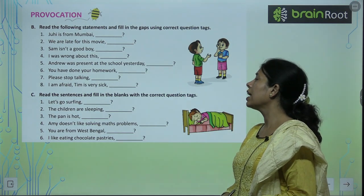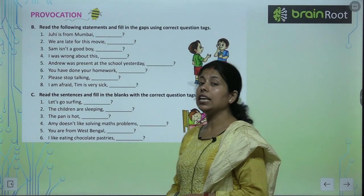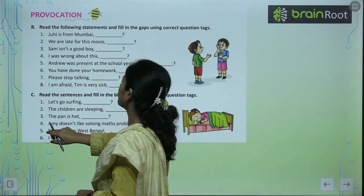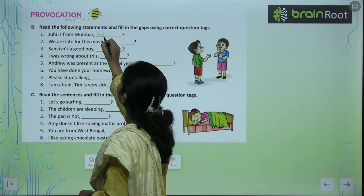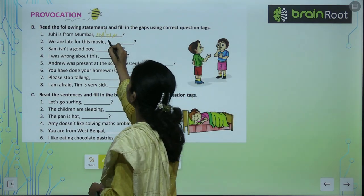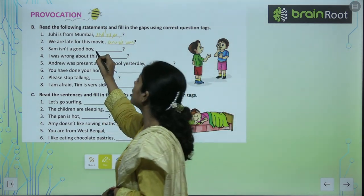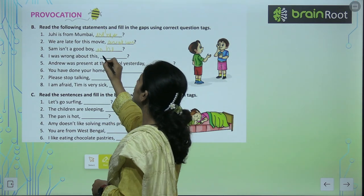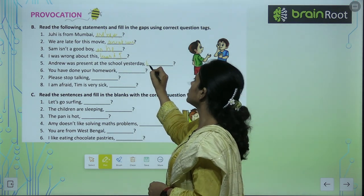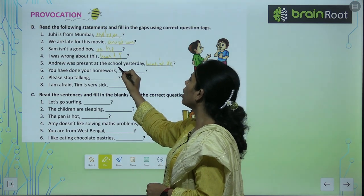Read the following statements and fill the gaps using the correct question tag। Chuhi is from Mumbai — isn't she? We are late for this movie — aren't we? Sam isn't a good boy — is he? हाँ पे negative से positive में जाएंगे। I was wrong about this — wasn't I? He was present at school yesterday — wasn't he? You have done your homework — haven't you?